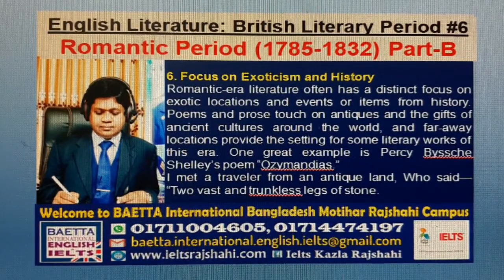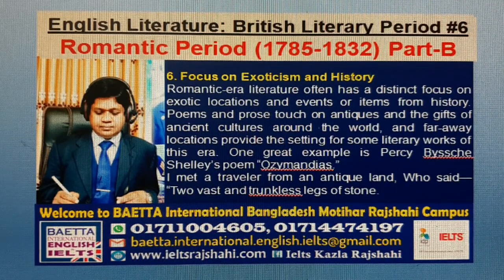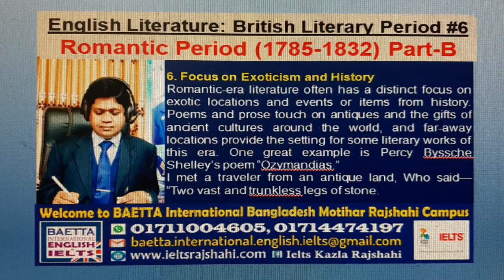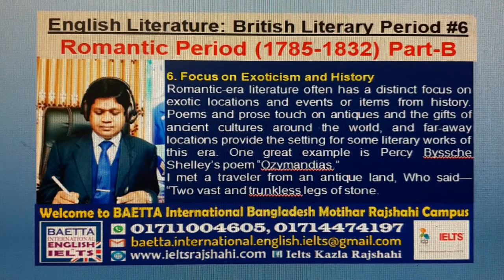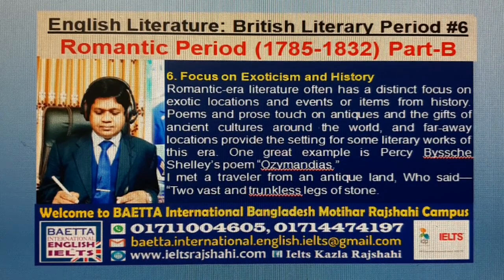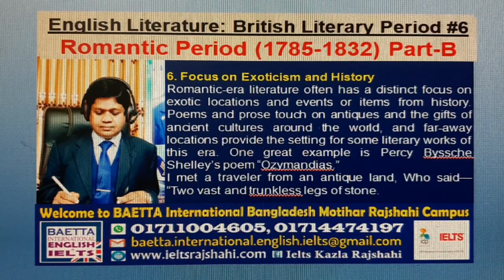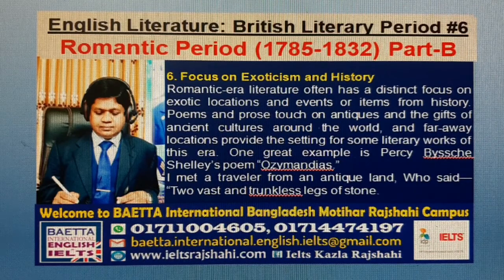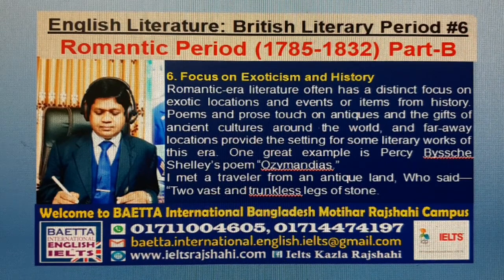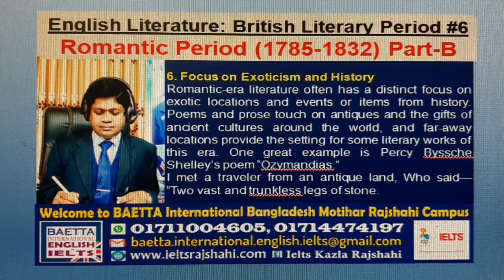6. Focus on Exoticism and History. Romantic era literature often has a distinct focus on exotic locations and events or items from history. Poems and prose touch on antiquities and the gifts of ancient cultures around the world, and far away locations provide the setting for some literary works of this era. One great example is Percy Bysshe Shelley's poem 'Ozymandias': quote, 'I met a traveller from an antique land who said, two vast and trunkless legs of stone', unquote.